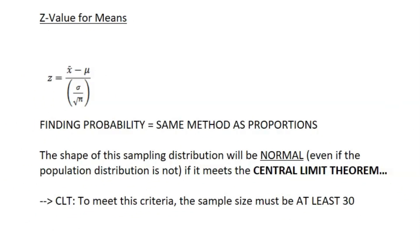There's the formula for the z-value. Again, you can just use your calculator. Honestly, the most important thing in AP Stats is knowing how to use your calculator because that will carry you a lot. Finding the probability is the same thing as finding the probability for proportions.